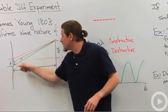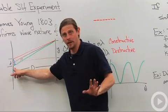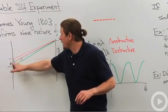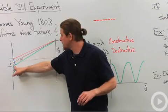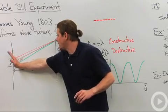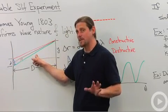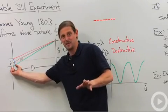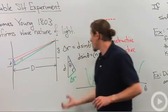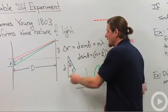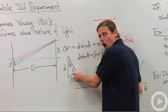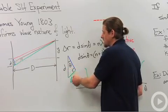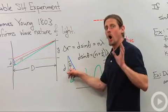Now, we can determine this approximately, this difference in distance, by drawing the following triangle right here. So we draw that down and we say the red and the green line are about the same distance and then we've got this little bit of excess from the bottom slit. So if we blow up this triangle, what we see is that this delta R, this difference in distance, is just equal to d times the sine of theta.